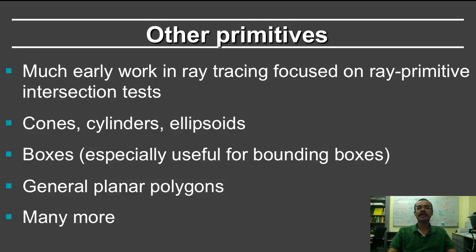Just want to say a brief word about other primitives. Although it's not required for the assignment, some of you may be interested in exploring various different types of primitives. And so there are well-defined intersection tests for cones, cylinders, ellipsoids, boxes, especially bounding boxes and general planar polygons. And it was one of the most active topics in the early days of ray tracing.